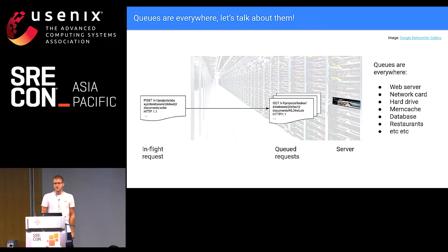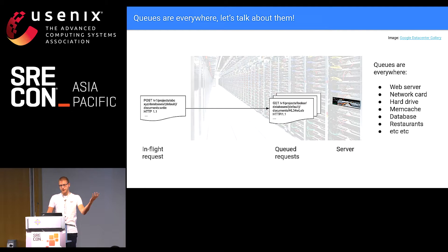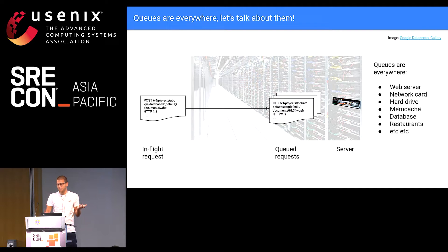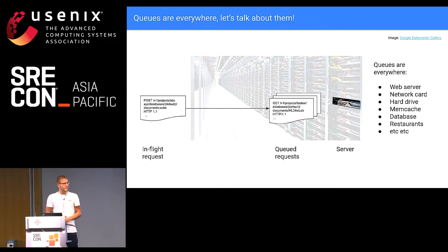Queues are everywhere — let's talk about them. All of you probably manage some sort of servers, and you have the concept of in-flight requests which are still on the wire, then they arrive at a server and queue up, and then the server handles the request and sends back a response. But queues are actually everywhere: a typical web server has them, your network card has a queue, your hard drive has a queue for IOPS so it can reorder them, your memcache server might have queues, the database has queues, even restaurants have queues.